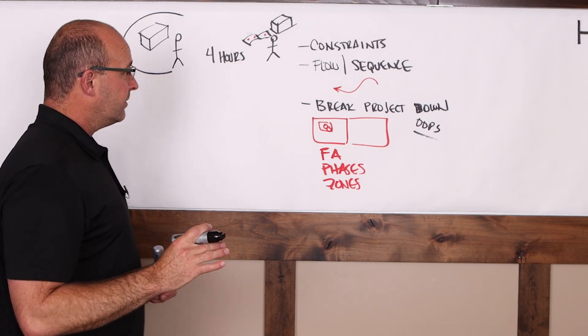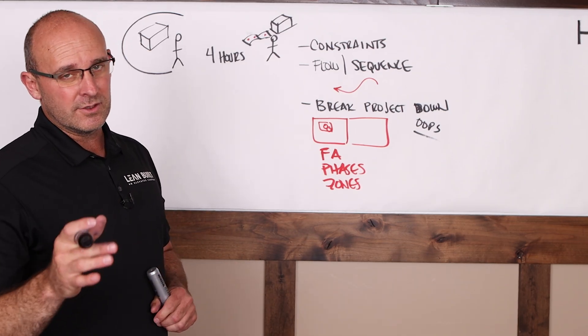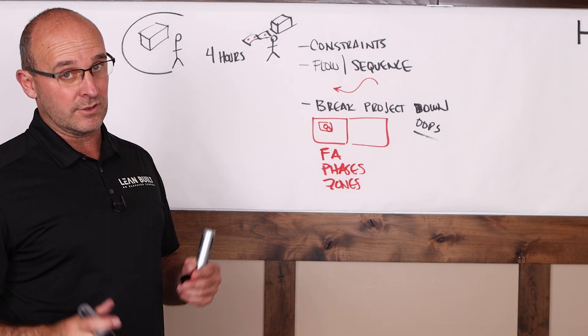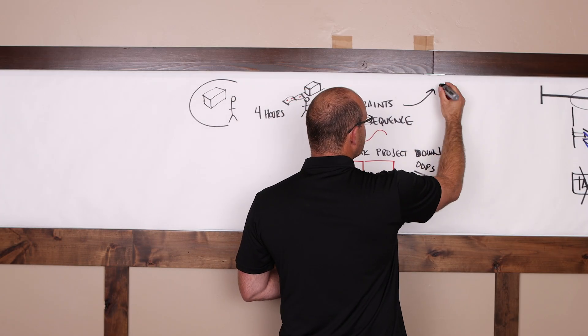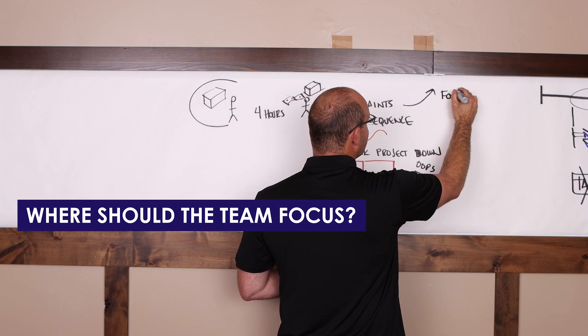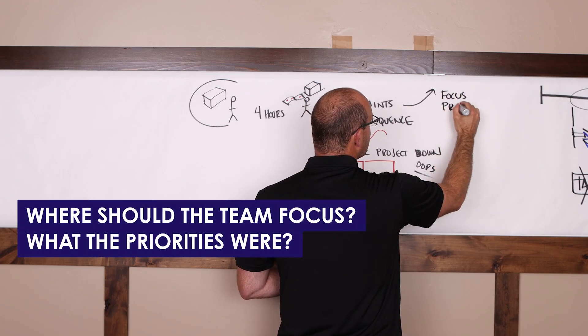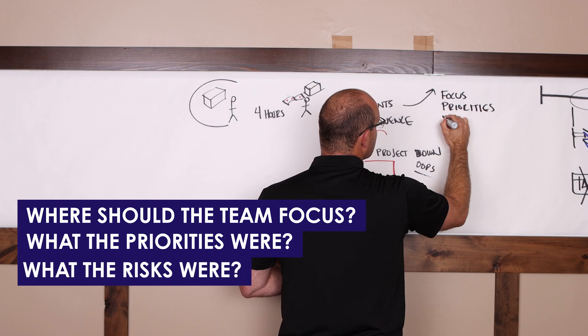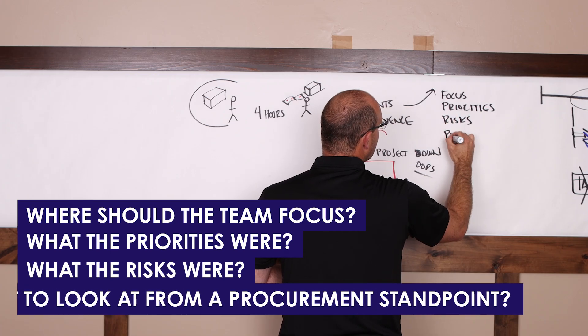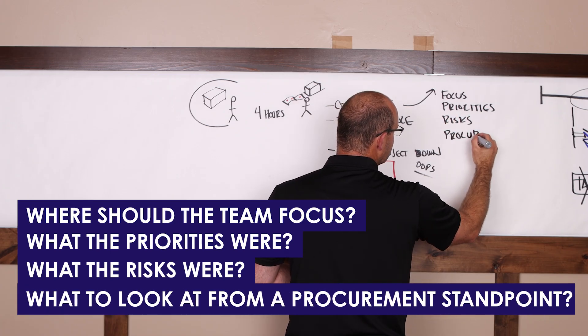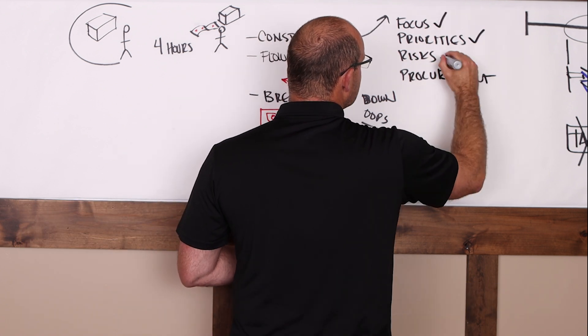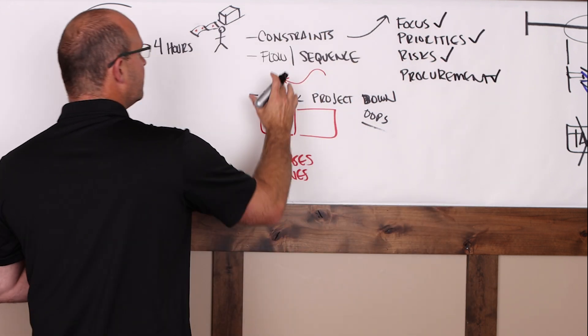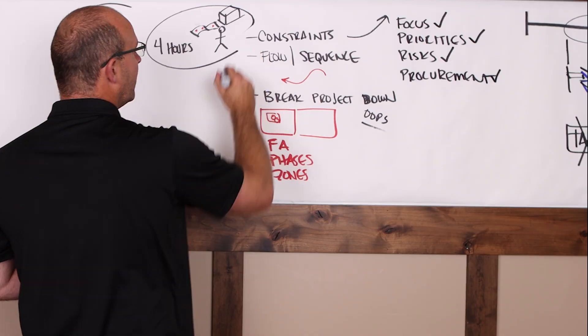I do want to share that recently on a project, it was only 96 million, but I was still like, it's pretty complex. I did this. And as an outgrowth of this, I was able to see where the team should focus, what the priorities were, what the risks were, what we need to look at from a procurement standpoint. And so basically all the things that I needed to do early on, I was able to do because I looked at the drawing from a high level.